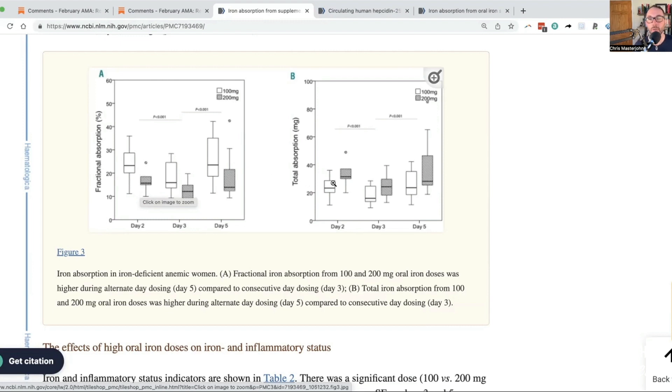If you go over to the total absorption, however, the total absorption is higher with the 200 milligram dose. What this is basically saying is the first 100 milligrams, you got about 23% absorption from. So you, on average, you absorb 23 out of 100 milligrams.